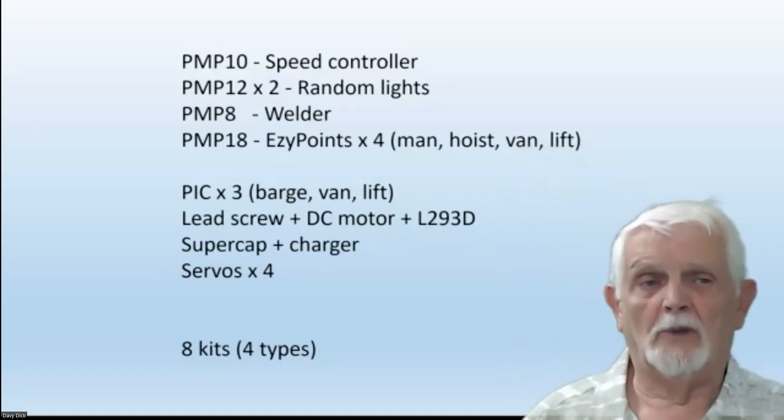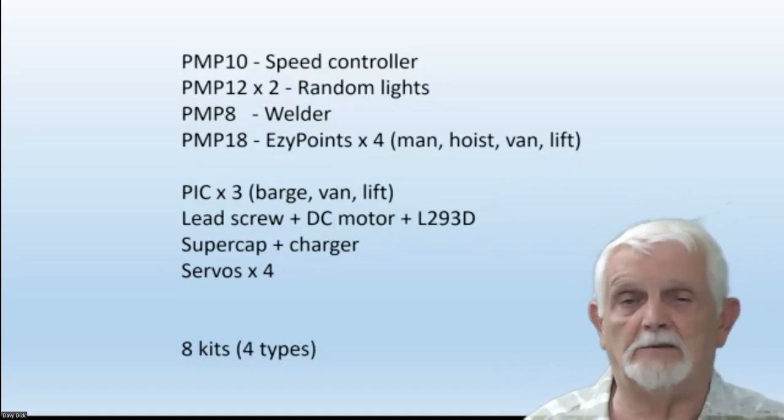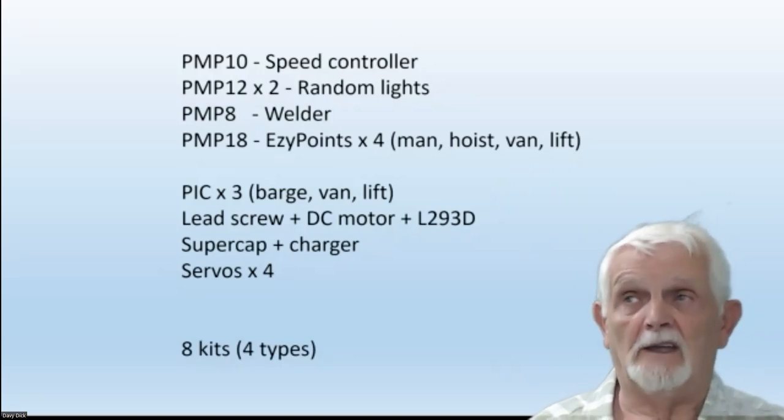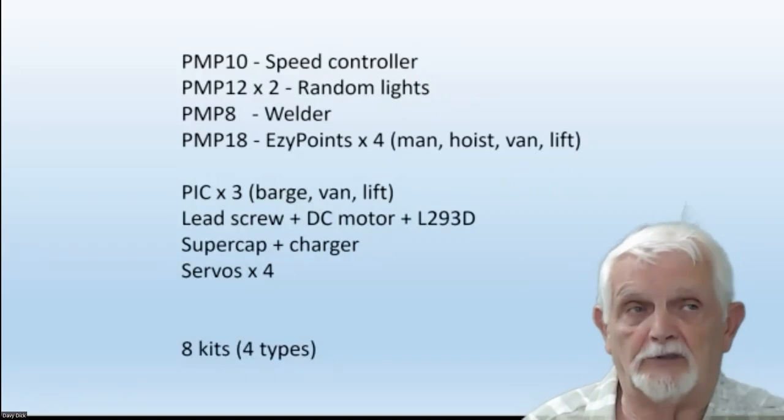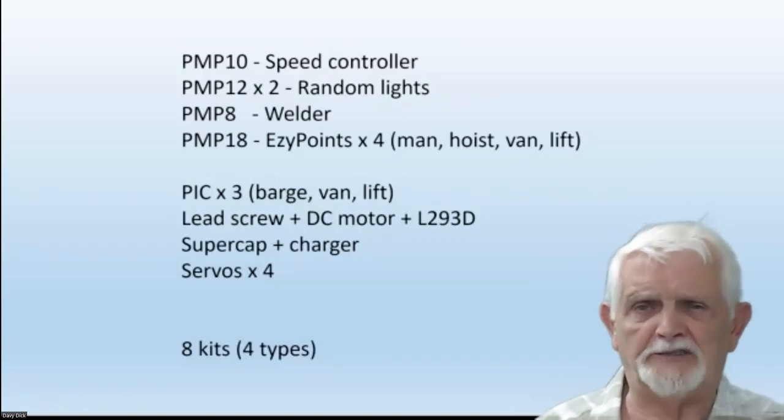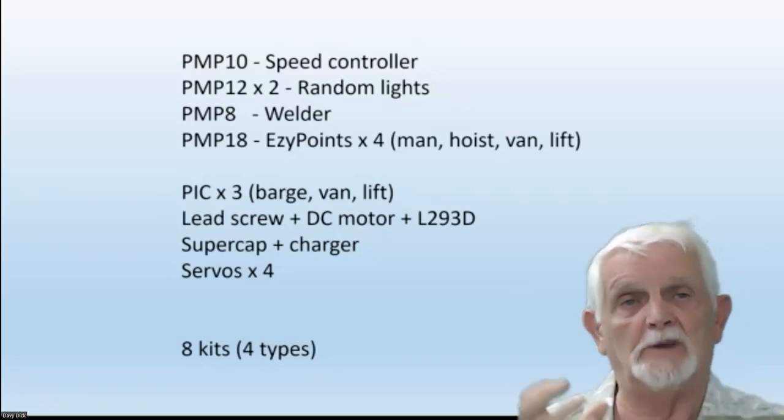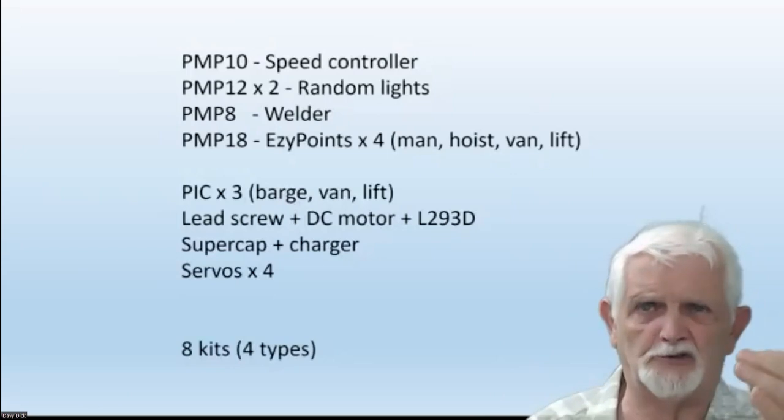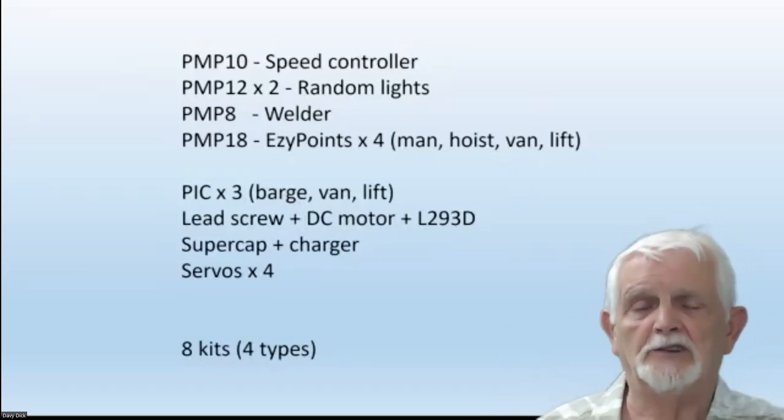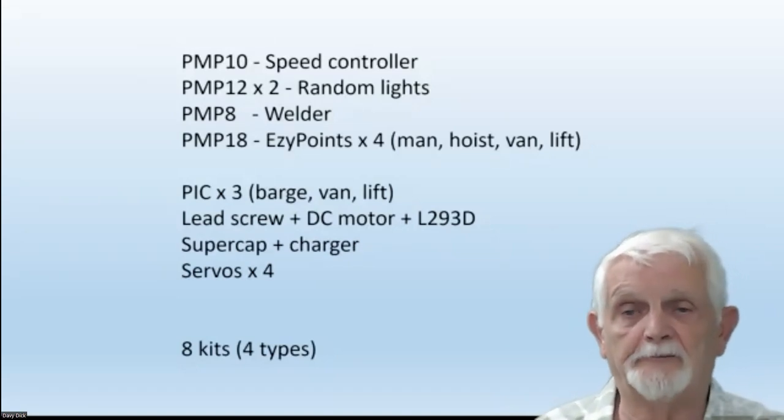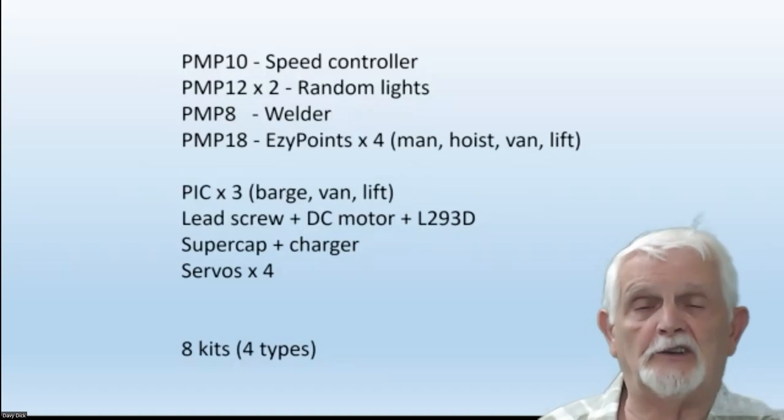So we've now covered the canal and all its animations and activities and lights and so on. And that's what's involved. Eight different kits involved. One for the speed controller to control the speed of the barge. Two random lights kits for the buildings coming on and off. We've actually got a welder in one of the buildings. You'll see it flashing. And four easy points for all the animations. And three PICs, one to operate the barge, one to operate the van and one to operate the lift. Somebody said to me, probably all the things you're doing this way could be run with one giant mega or whatever. But we wanted to avoid that for a couple of reasons. One is, if the mega goes, everything goes. We've lost a lot. Plus we wanted to have as many things independent. We don't want the random lights to run with the mega. We want to showcase a random lights kit. The same with the speed controller, same with the welder and so on. So we deliberately used individual kits to achieve what we wanted.